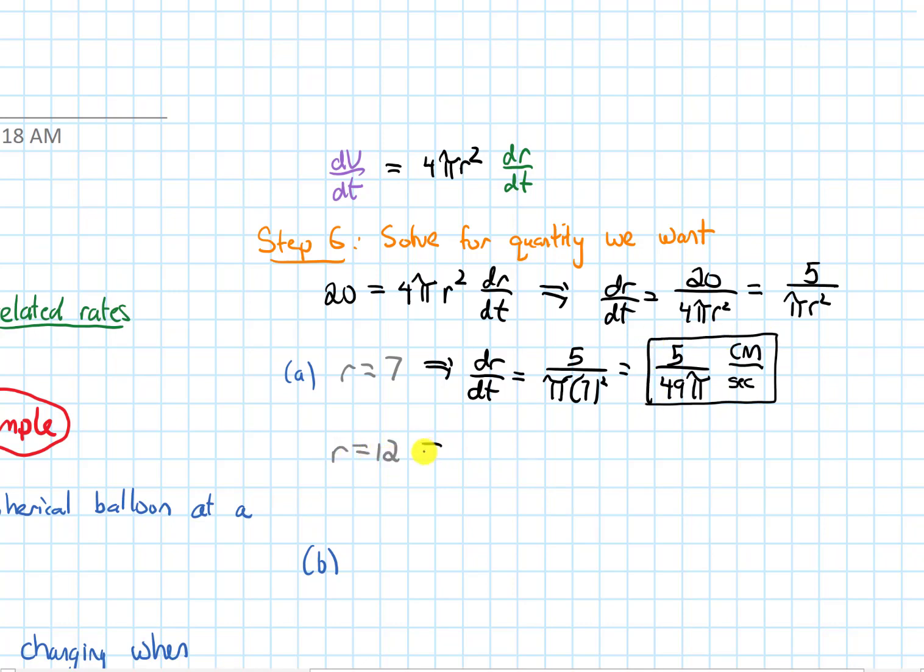If I do the same thing with 12, we get dr/dt equals 5 over π times 12 squared. Multiplying that out, we get 5 over 144π, and the units are going to be the same - centimeters per second.